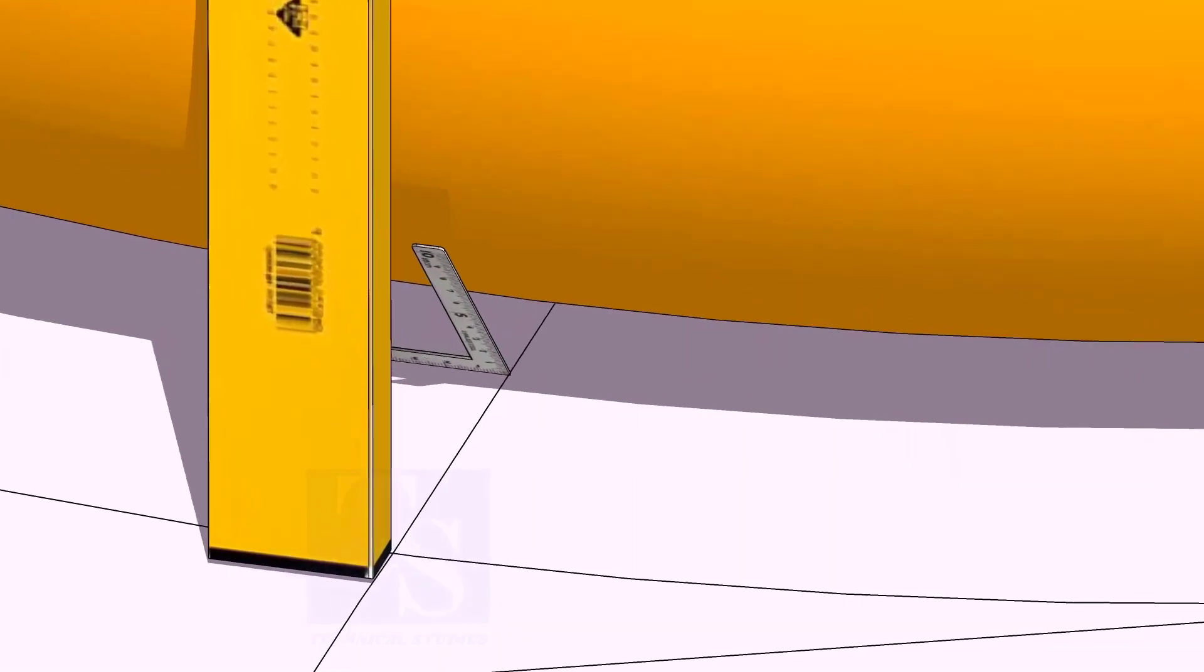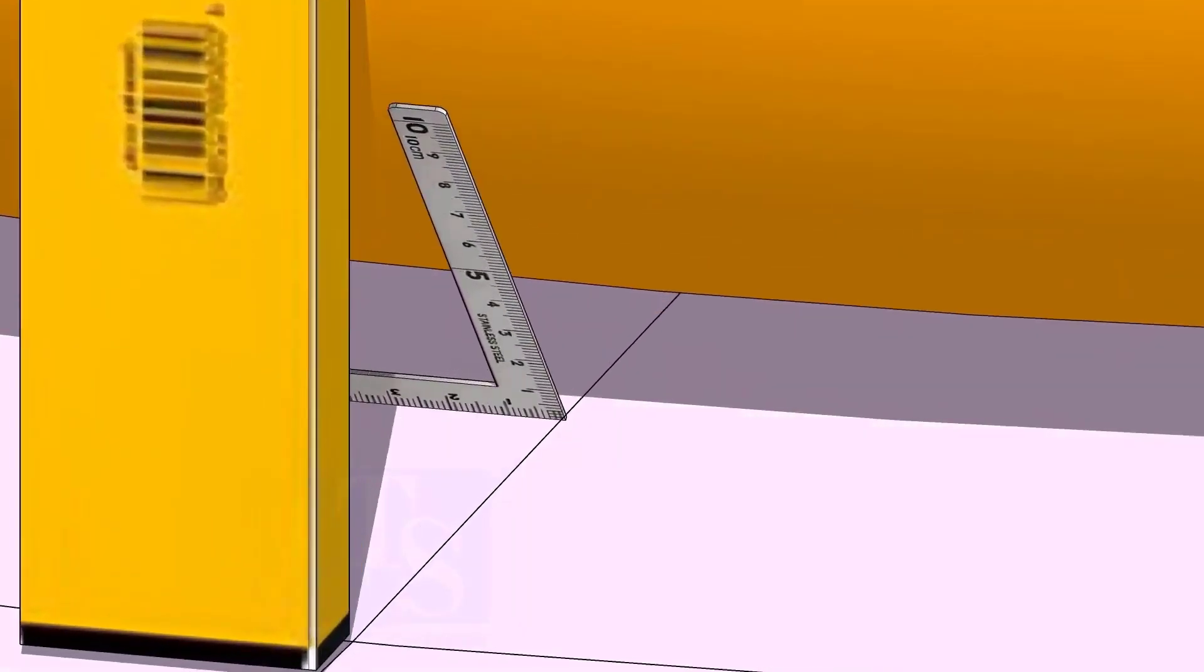At the bottom side, use a small right angle and transfer the line to the elbow on both sides.